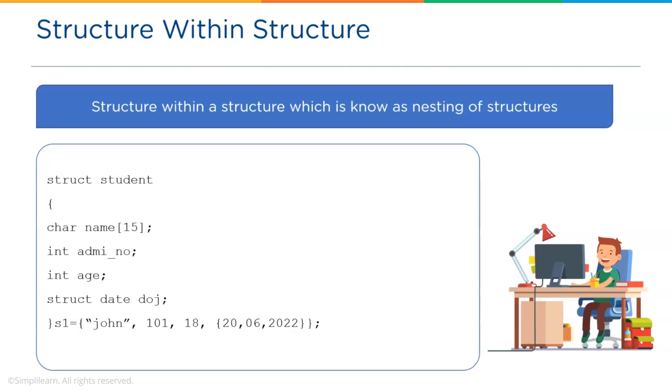So, a structure date has its own members and they are date, month, and year of type int. And structure variable for date is doj. And the structure variable is initialized for both the members of the structure. That is, name, admission number, age, date, month, and year.